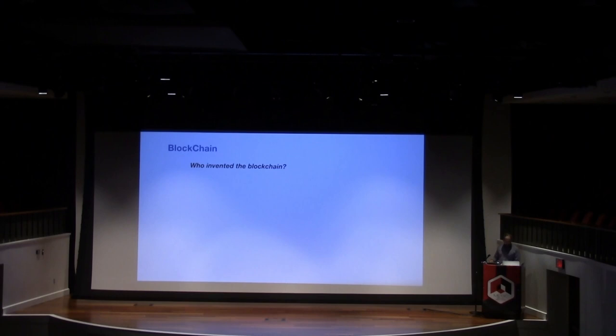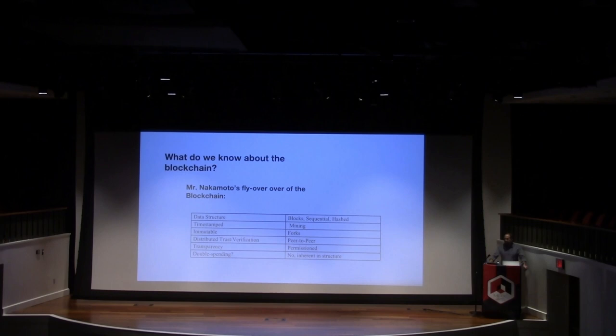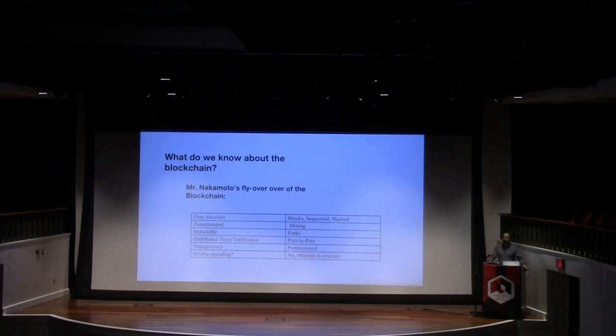Who invented blockchain? Satoshi is generally believed to have invented blockchain. Let's do a flyby of what we know from today's conference. It's a data structure. It contains blocks in sequential fashion, hashed to the blockchain. It's timestamped, you can verify it by mining, it's immutable, it forks if there's an issue — you can't go back and change it. Distributed trust verification is accomplished in a peer-to-peer fashion. There's transparency depending upon the commissioning of it, and you can verify transactions and solve the double-spending problem.